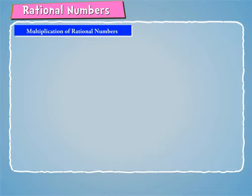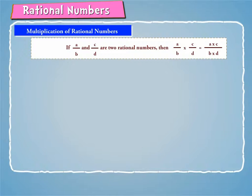Let us discuss the multiplication of rational numbers. We have already learned about the method of multiplication of two rational numbers. We also know that if a by b and c by d are two rational numbers, then a by b into c by d is equal to a into c by b into d.